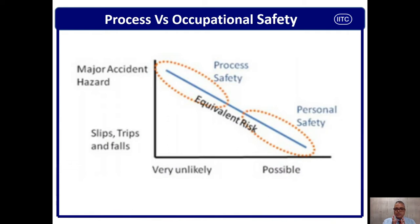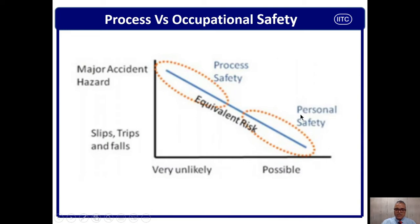This slide gives clearer information on process safety versus occupational safety. Looking at the graph — the Y axis represents likelihood or frequency, and the X axis shows accident category from slip, trip and falls up to major accident hazards. The slanting light blue line represents personal or occupational safety, showing it is high in possibility or frequency.